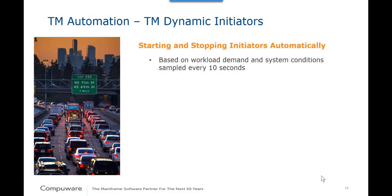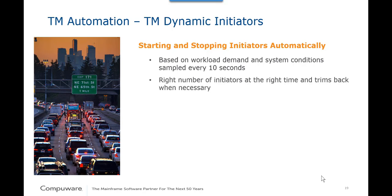Lastly, the dynamic Throughput Manager initiators provide the multiple servers for the single queue. SLM intelligence also extends to these dynamic initiators, giving them more automated intelligence than WLM initiators. Automated intelligence determines the right number of initiators at the right time. SLM manages the number of initiators by basing its decisions on system performance information, which it evaluates every 10 seconds, and on constraints built into the SLM policy. SLM deploys as many initiators as needed to meet the workload goals, managing within the constraints of the system load, and trims them back as needed, making the best use of available resources.